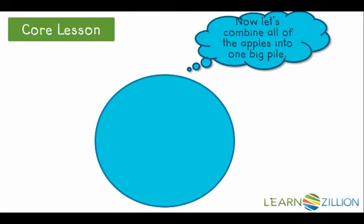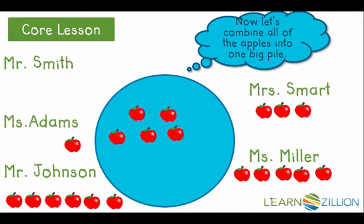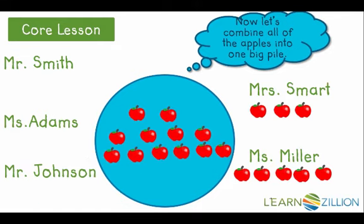The next thing we need to do is combine all of the apples into one large pile. So we're going to take all five teachers' apples and put them inside the circle. In other words, we're going to combine all of the data.